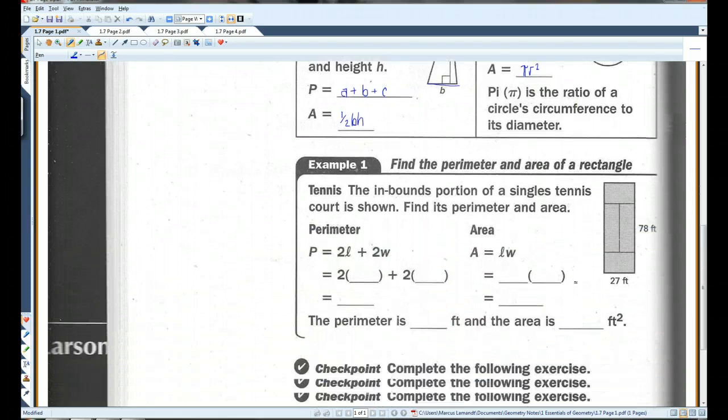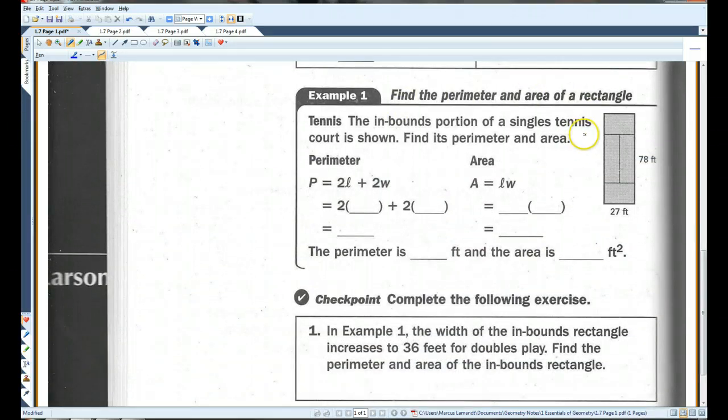Alright, let's do an example. The inbounds portion of a singles tennis court is shown. Find the perimeter and the area. So, we have this rectangle. The perimeter of a rectangle, once again, is 2 times the length plus 2 times the width. We know that the length is 78. And we know that the width is 27.